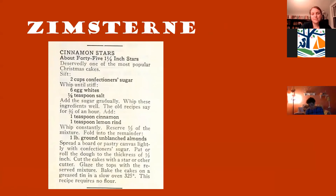Zimtsterne — this recipe is from a 1950s edition of the Joy of Cooking, and this recipe interests me because it is gluten-free. It's just sugar, egg whites, cinnamon, lemon, and almonds — there's no flour in them, so they're kind of like a macaron. They're always cut into stars, sometimes frosted and sometimes not — just a fun older recipe.